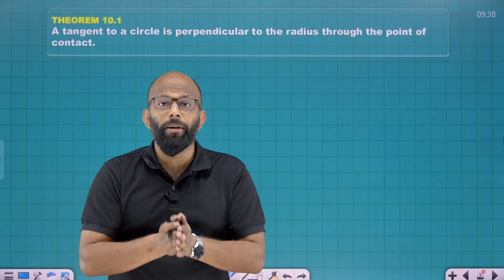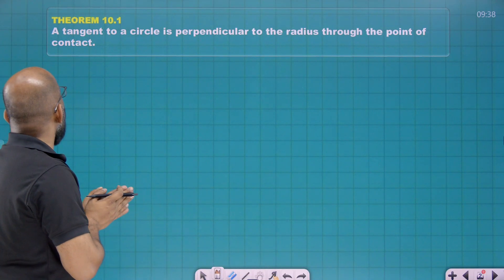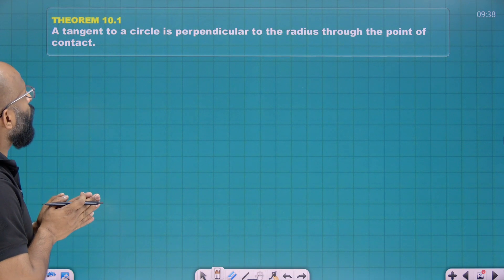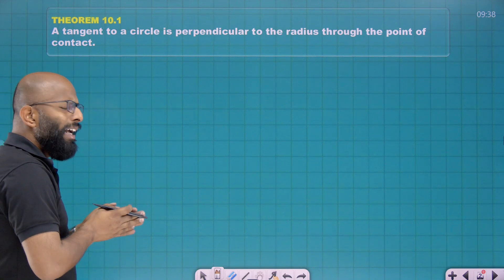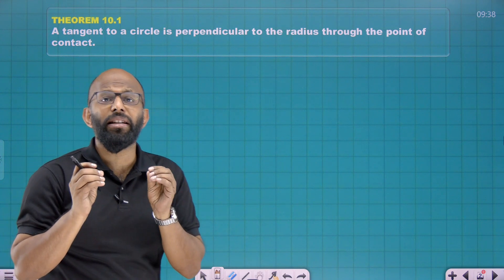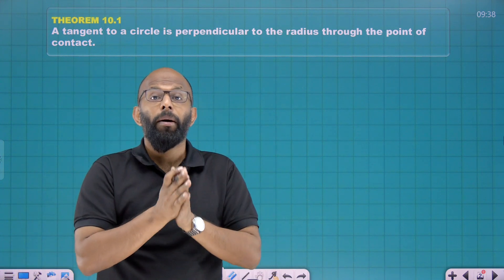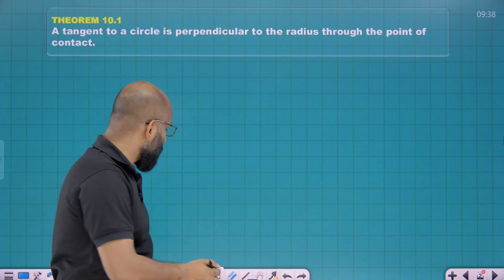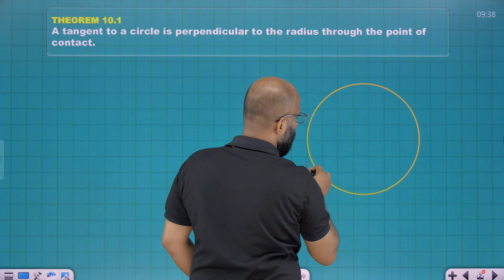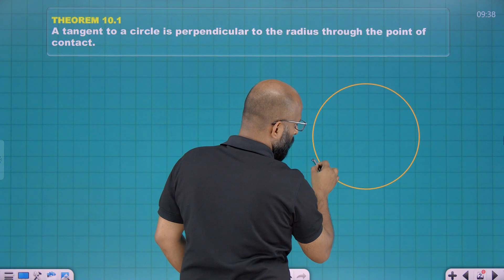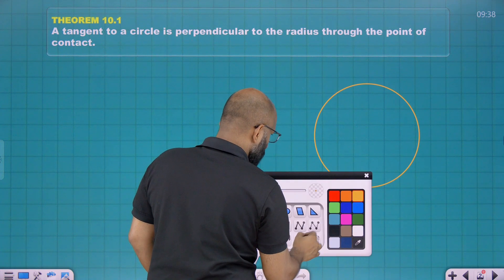So let's move to Theorem 10.1. The tangent to a circle is perpendicular to the radius through the point of contact. We need to prove that the tangent is perpendicular to the radius. So we can draw a circle here.